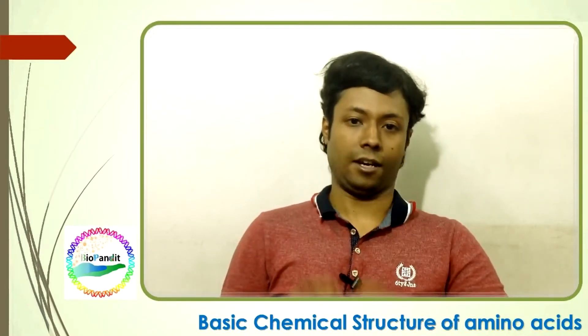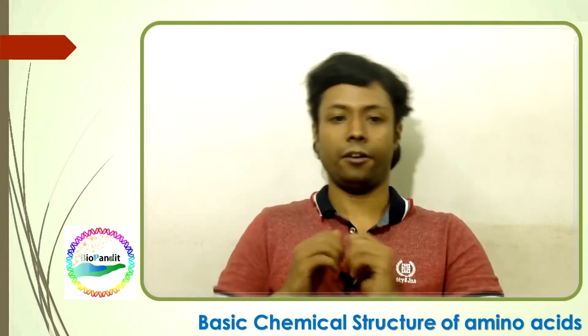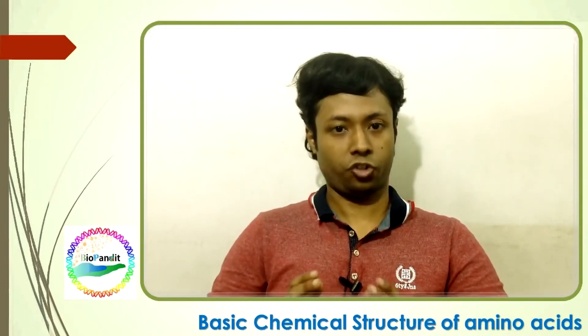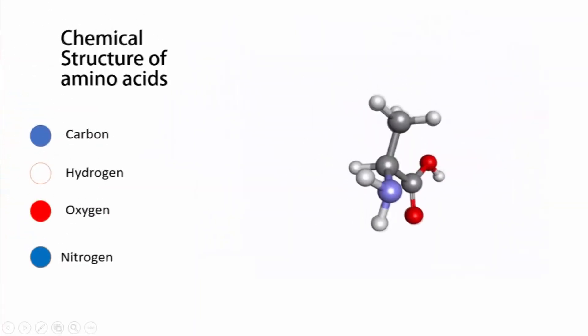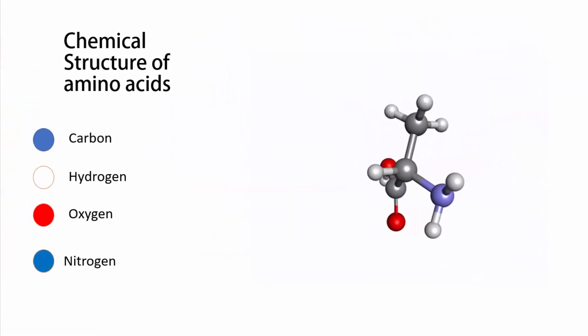Proteins are made of amino acids. Nucleic acids are made of nucleotides. Here, I am going to talk about amino acids. Amino acids are the structural units of proteins, and this is the basic chemical structure of an amino acid.